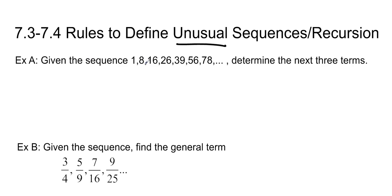Example A: given the sequence 1, 8, 16, 26, 39, 56, 78, determine the next three terms. So the quickest way to really get started is to try the differences. I'm going to write it out again so that I have more space.